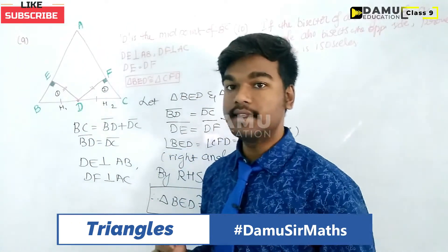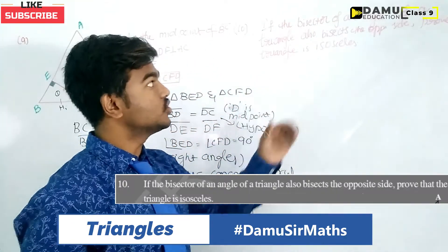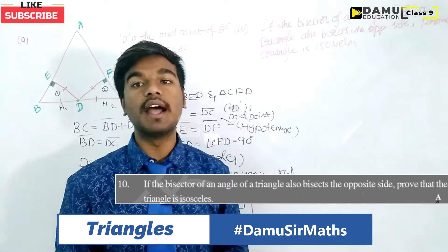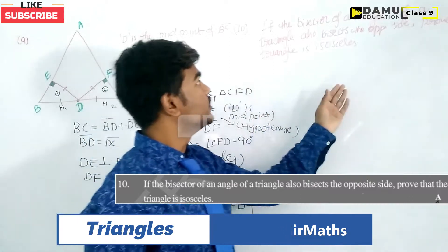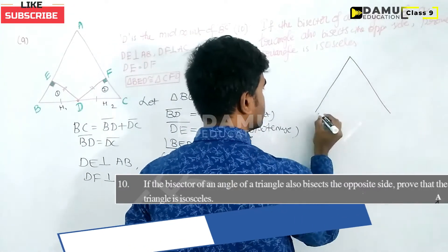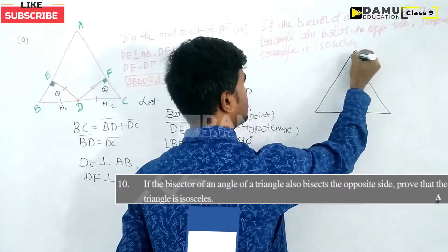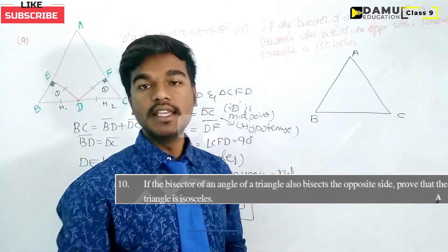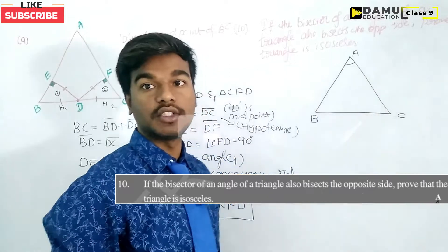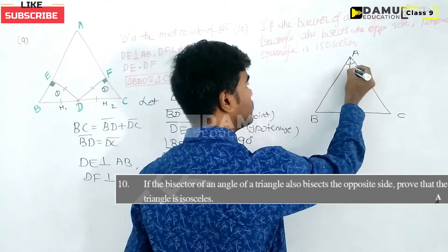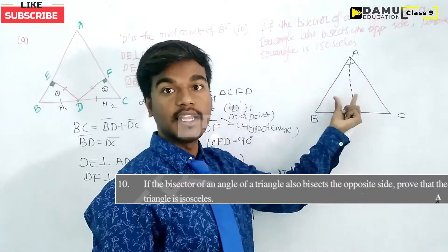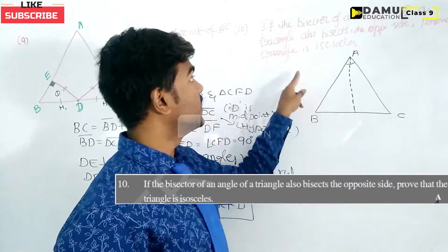Our tenth question: if the bisector of an angle of a triangle also bisects the opposite side, prove that the triangle is isosceles. Bisecting means dividing into two equal parts. Let us draw triangle ABC. The bisector of angle A divides angle A into two equal parts.